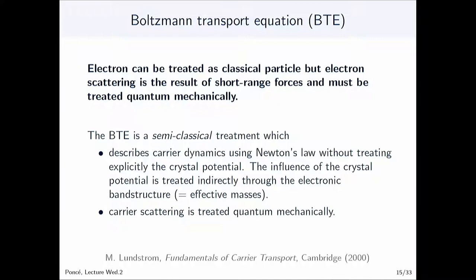The Boltzmann equation tries to solve that in a semi-classical way. Treating the electron propagation as a classical particle is a relatively good approximation. However, electron scattering results in short-range forces, and you really need to describe that quantum mechanically, otherwise you get bad results. The idea of the Boltzmann transport equation is to describe part of the equation semi-classically and part quantum mechanically: the motion between scattering events is described semi-classically, but the scattering itself is treated fully quantum mechanically.